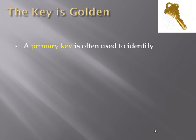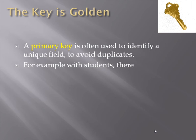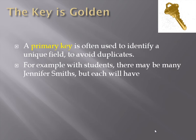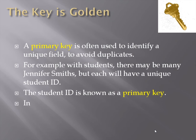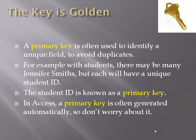A primary key is often used to identify a unique field to avoid duplicates. For example, with students there may be many Jennifer Smiths, but each will have a unique student ID — that student ID is known as a primary key. In Access, a primary key is often generated automatically, so we're going to let Access create a primary key for us when we work with our tables.